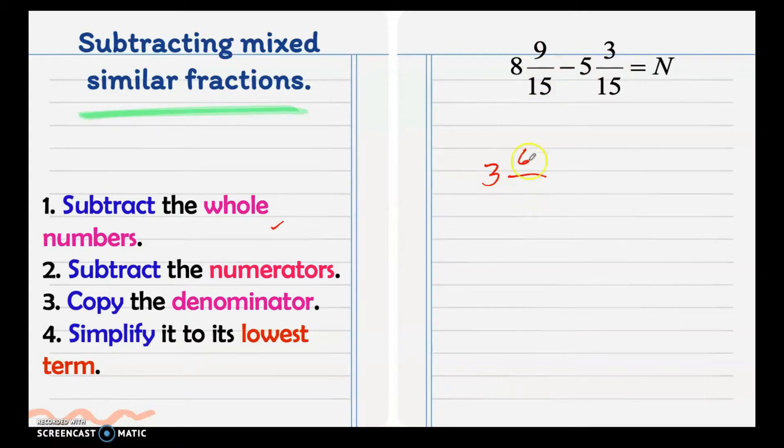Then copy the denominator which is 15. Now simplify to its lowest term. 6 and 15 have common factor, so let's find its lowest term using the continuous division method. The common factor between 6 and 15 is 3. We have 6 divide 3 is 2, 15 divide 3 is 5. No other common factor aside from 1. Our answer is 2/5, but don't forget the whole number. So our final answer is 3 and 2/5.